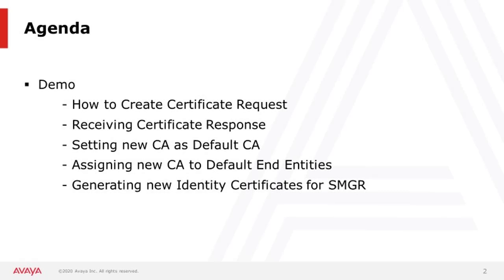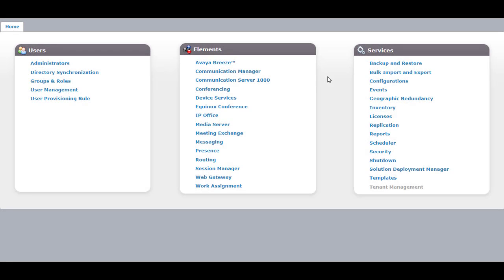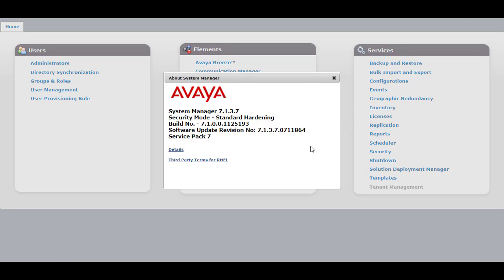I am going to show a demo on how to set System Manager CA as a sub CA. During the demo, we will be seeing how to create a certificate request, receive the certificate response, set the new CA as the default CA, assign the new CA to default end entities, and generate new identity certificates for the System Manager. I will be showing the demo on System Manager 7137, but the procedure will be the same for 8.x systems.